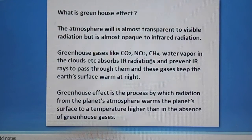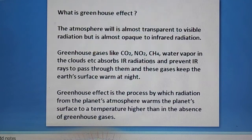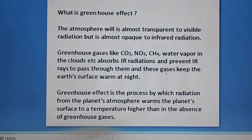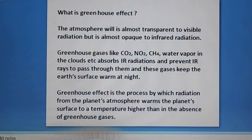They absorb infrared radiation and prevent IR rays to pass through them. And these gases keep the earth's surface warm even during night. Greenhouse effect is the process by which radiation from the planet's atmosphere warms the planet's surface to a temperature higher than in the absence of greenhouse gases. So it will keep on warming the atmosphere, and that is called greenhouse effect.